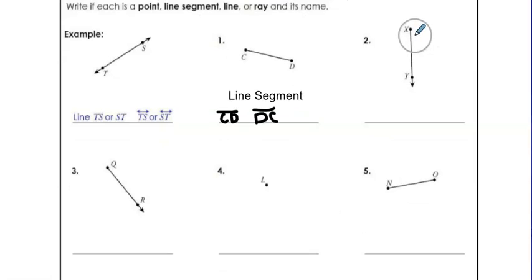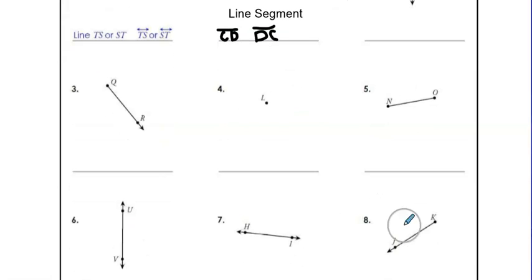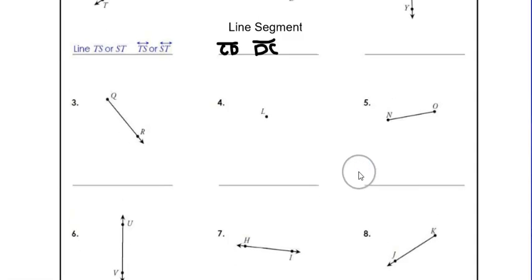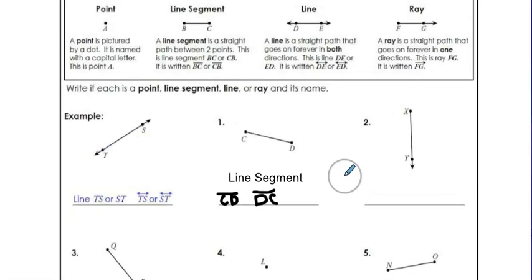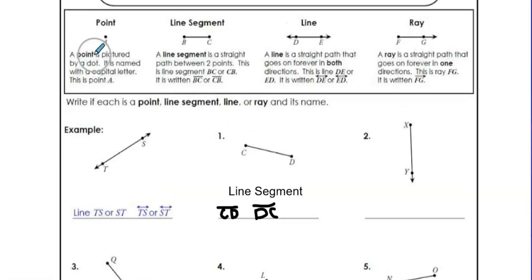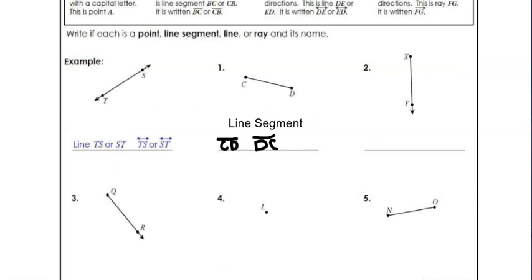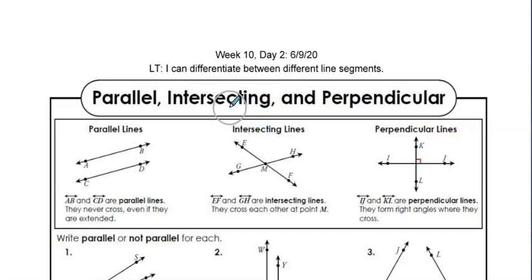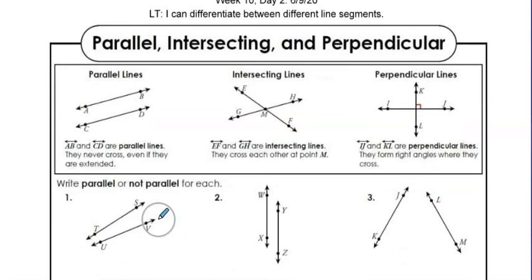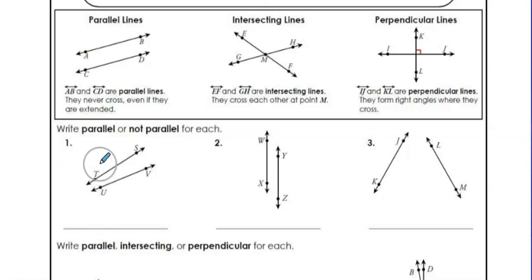You're going to go through and identify and name the different lines, points, rays, or line segments. There are examples at the top of the page for reference. Moving on to page 16 — this is week 10, day two. The learning goal is: I can differentiate between different line segments. On Tuesday, you're going to write whether each example is parallel or not parallel.